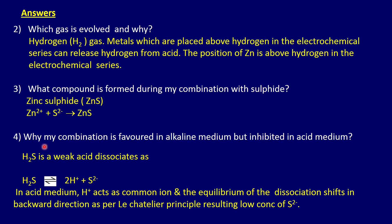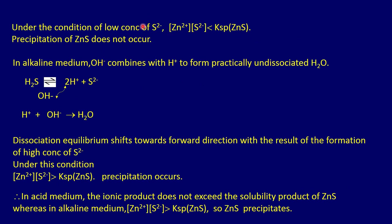Question four: why is the combination favored in alkaline medium but inhibited in acid medium? Hydrogen sulfide is a weak acid that dissociates into H⁺ and sulfide ions. In acid medium, the H⁺ acts as a common ion, suppressing dissociation of H₂S, so only a low concentration of sulfide ions is formed. With this low sulfide concentration, the ionic product of zinc and sulfide cannot exceed the solubility product of zinc sulfide, so no precipitation occurs.